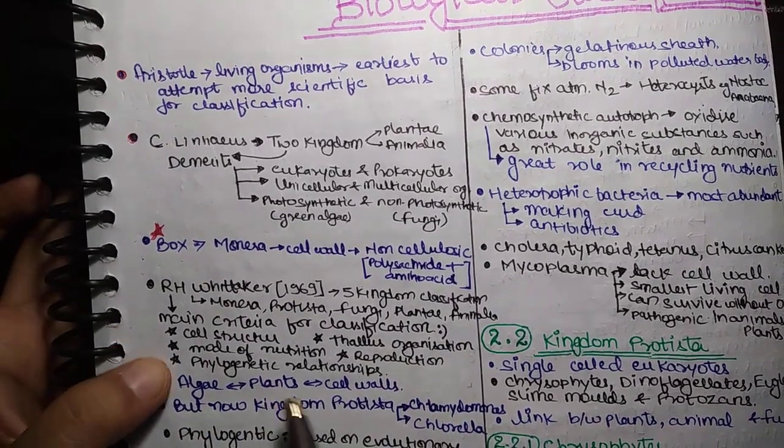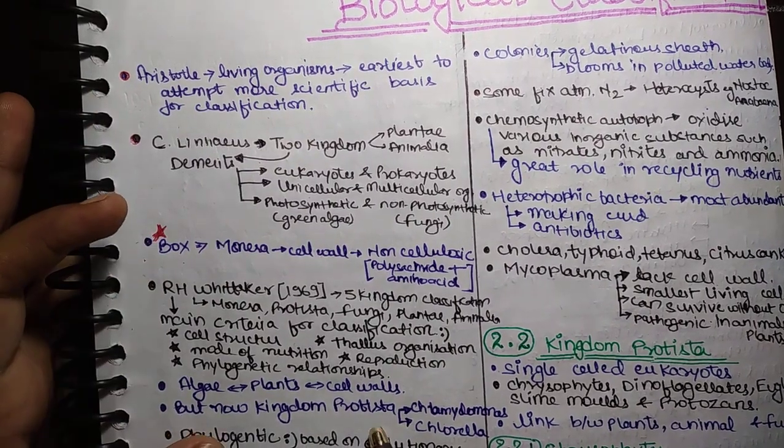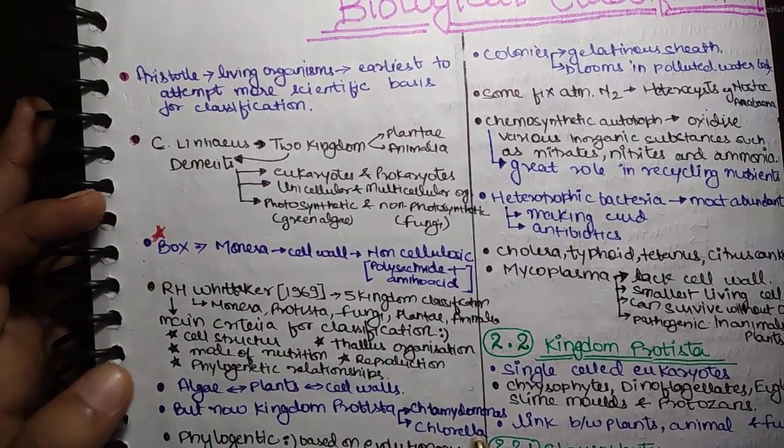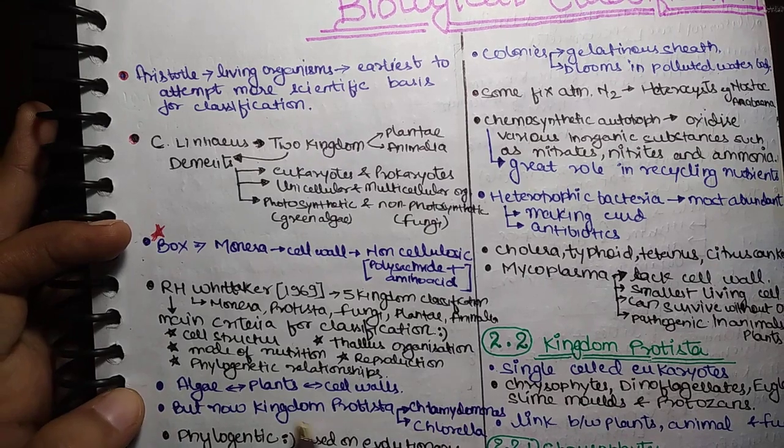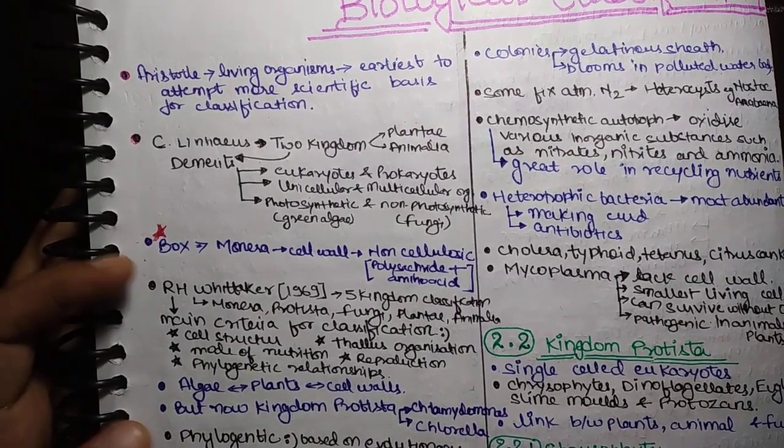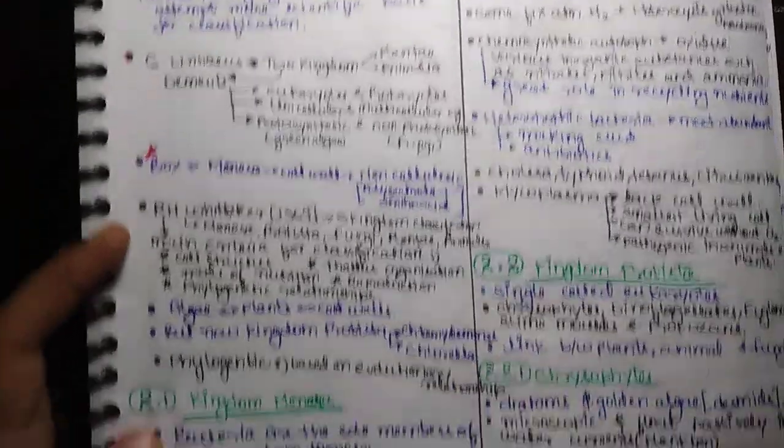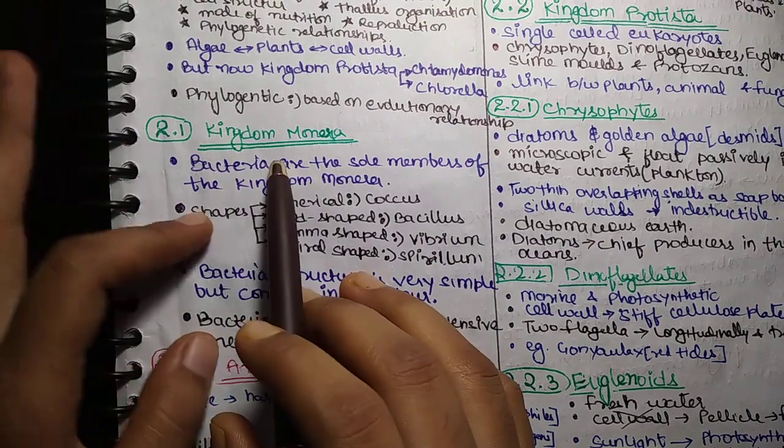Algae and Plantae are both cell walls. But now, Kingdom Protista, Chlamydomonas and Chlorella. What is phylogenetic? Based on Evolution Relationships. First, sub-topic is Kingdom Monera.